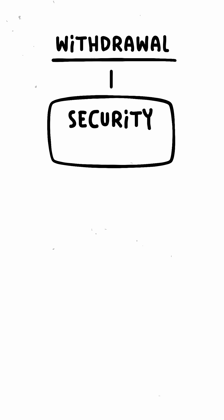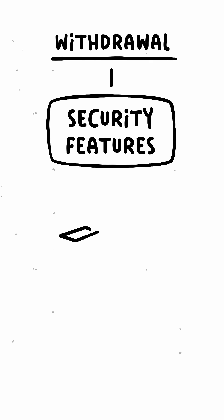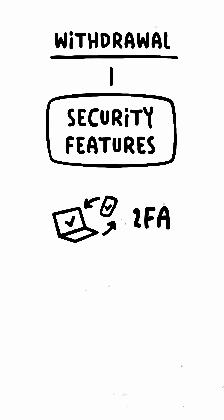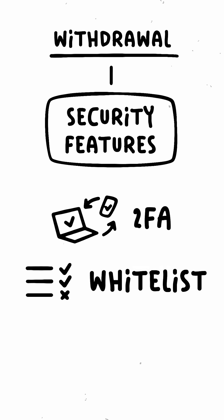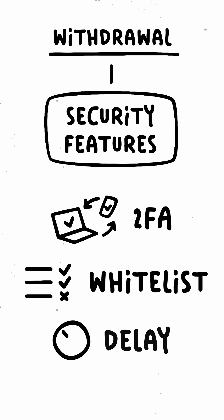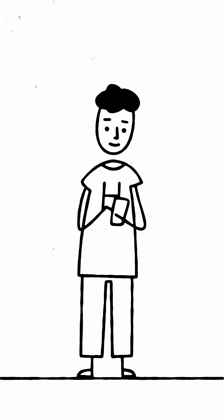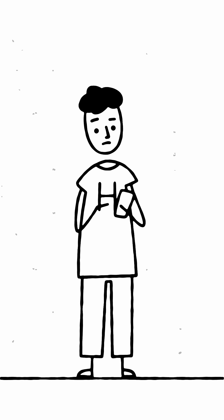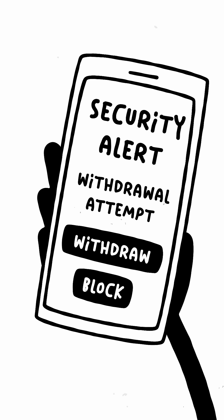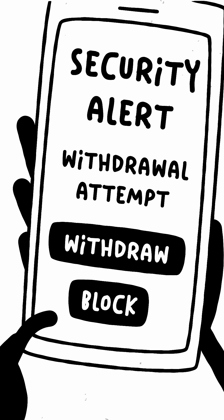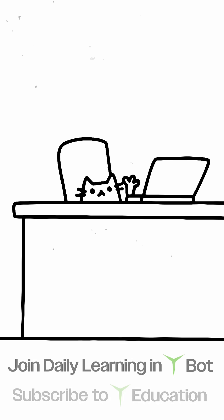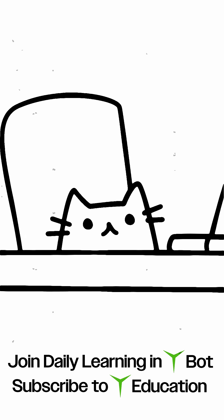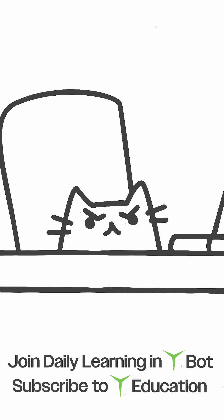When Harry wants to withdraw, the exchange offers security features like two-factor authentication, whitelists, and withdrawal delay. By using these, Harry can protect his crypto on the CEX, ensuring that even if someone gains access to his login credentials, they won't be able to withdraw his funds without him noticing and blocking the attempt.